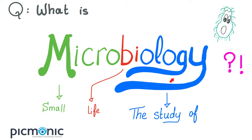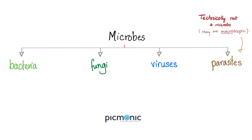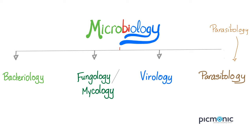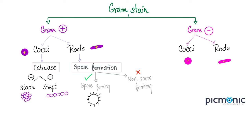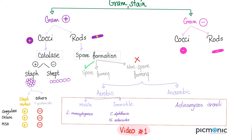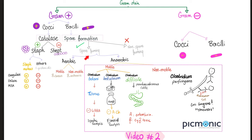Microbiology is the study of small life. Microbes are divided into bacteria, fungi, viruses, and parasites, and that's why microbiology is divided into bacteriology, mycology, virology, and parasitology. With the gram stain we have gram-positive or gram-negative — thick versus thin peptidoglycan cell wall. Gram-positive cocci can be catalase-positive like Staph, or catalase-negative like Strep. Gram-positive rods can be spore-forming or non-spore-forming. Non-spore-forming include Listeria, Corynebacterium diphtheriae, Nocardia, and Actinomyces.